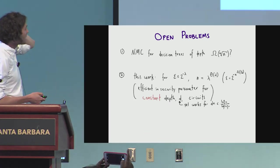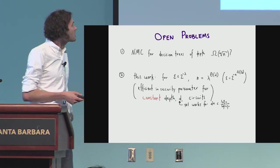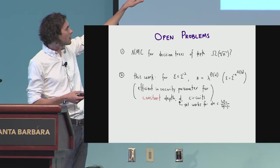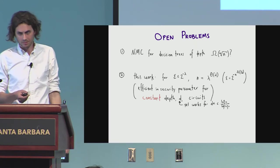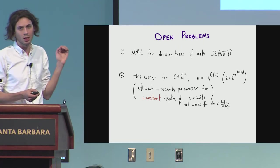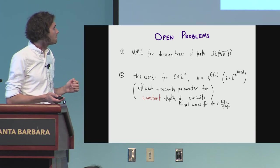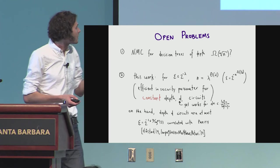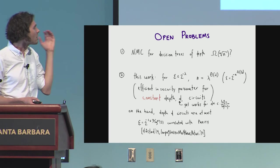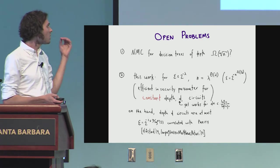And second, the problem I'd like to leave you with is, in this work, for epsilon, we achieve this epsilon that's 2 to the n to the 1 over d. So for constant depth, this gives you something that's polynomial in the error parameter and the security parameter. But this isn't quite, for very large circuits, this is more or less consistent with the best things that are known in circuit lower bounds. But for small circuits, it's a bit different.